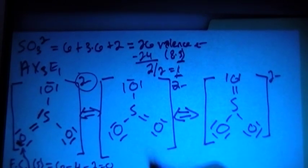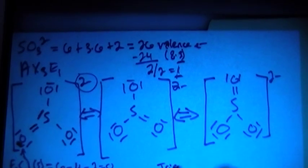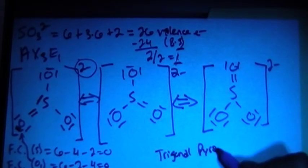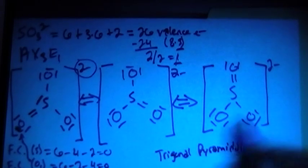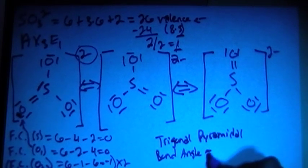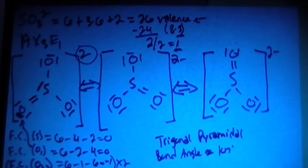So the shape is going to be trigonal pyramidal, and the bond angle is going to be approximately 107 degrees.